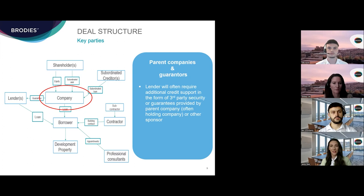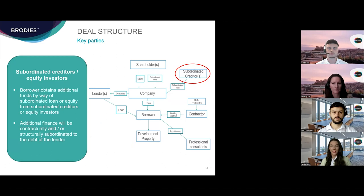The benefit of a holding company being the parent of the SPV is that it's much more straightforward to take security over the shares in the borrower rather than having multiple individual shareholders. The lender is unlikely to provide all the money needed to buy the site and develop the property — typically the borrower will need to obtain the balance by way of subordinated loan or equity from equity investors or subordinated creditors, such as a director of the borrower or another group company hoping to share in the uplift from the property development.